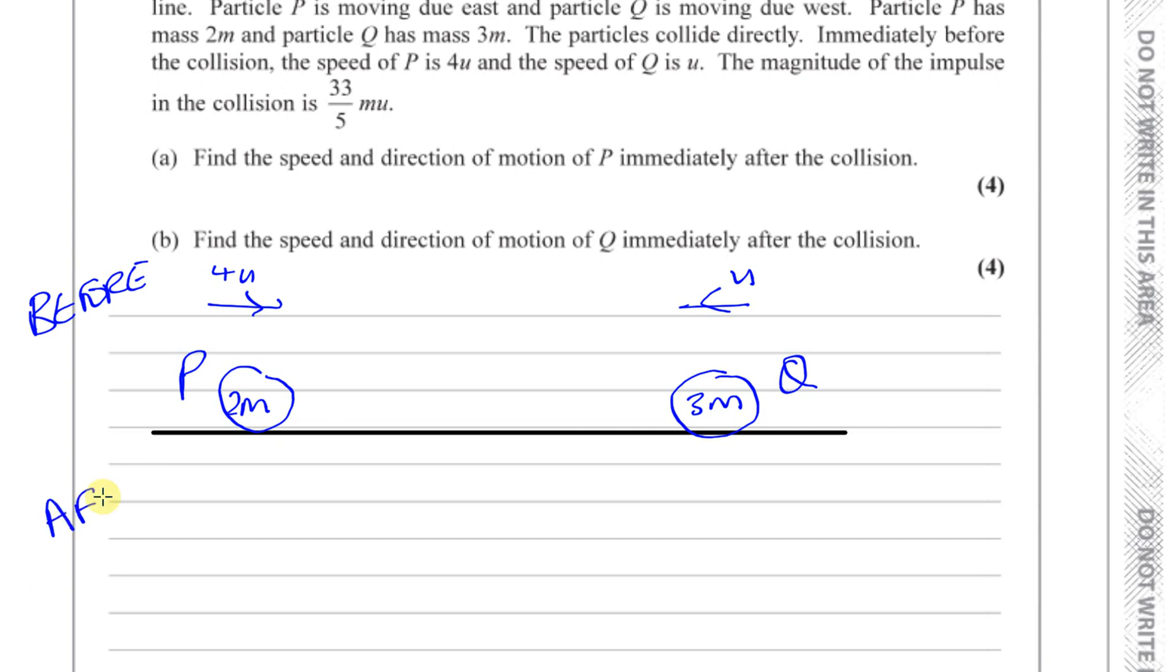So we've got to find the speed and direction of P and of Q after the collision. We need to find what is happening here and here. We don't know which way they're going. It didn't tell us about the speeds after the collision. We know the total momentum before, but we don't know anything about the momentum after. So how are we going to sort this question out? Well, they gave us another piece of information. They told us about the impulse. The magnitude of the impulse is given to us. So that should be a clue.